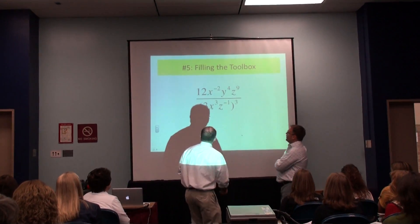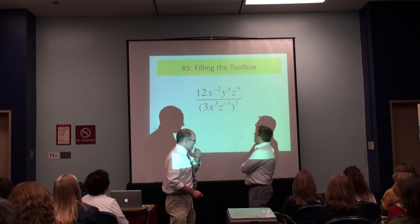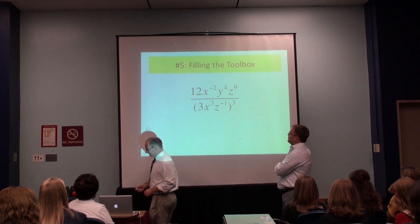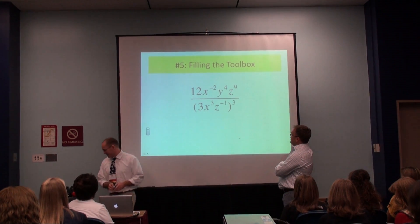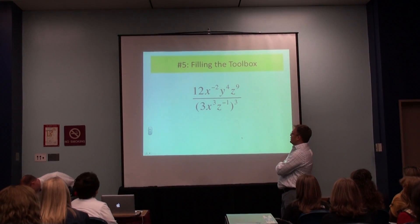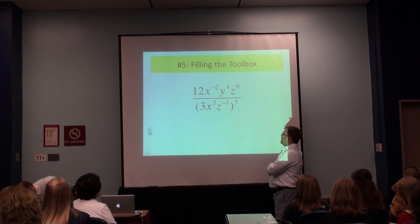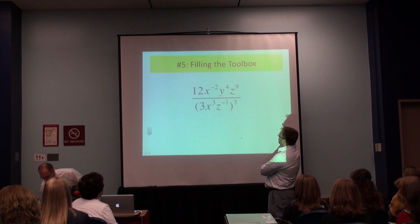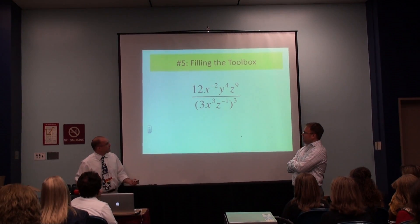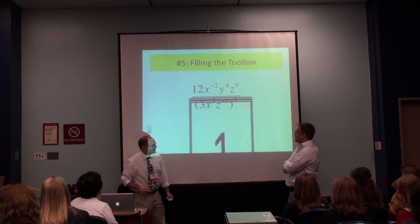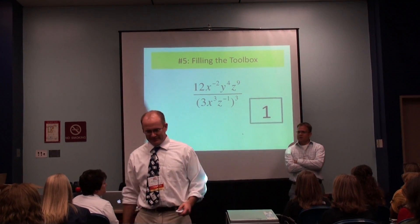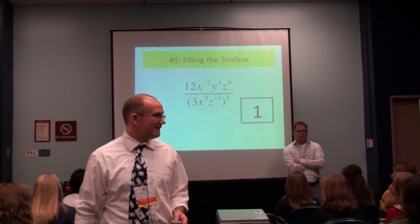Mr. Hopkins, what problem do we got here today? Looks like we're going to have to rationalize our fraction here and get rid of some coefficients and maybe do a little work with our variables. So we got some negative exponents here. What should we do?